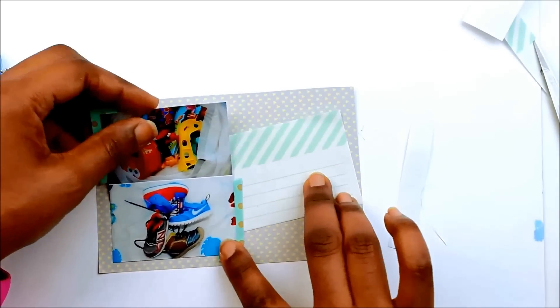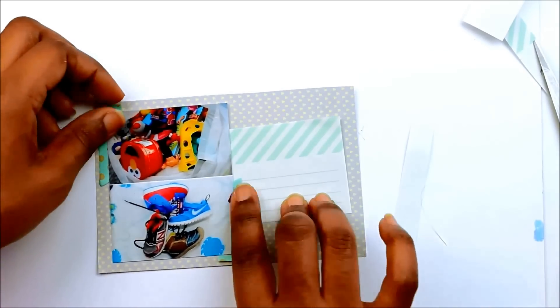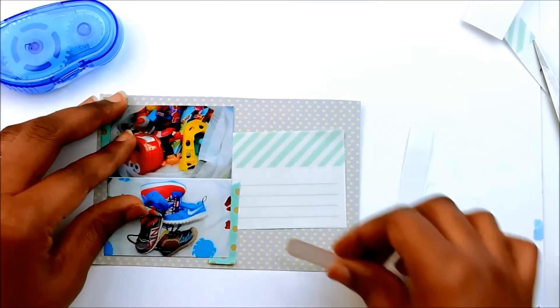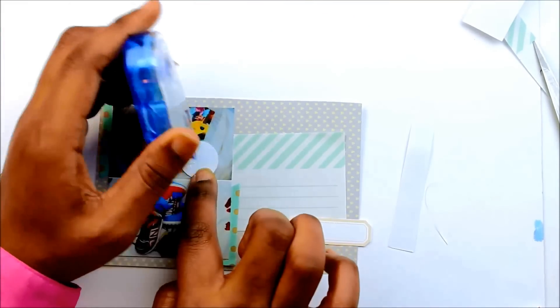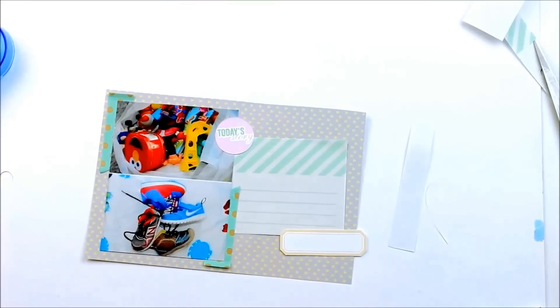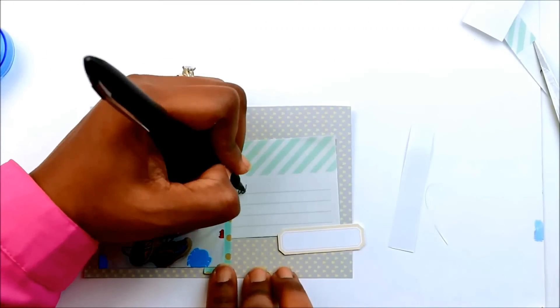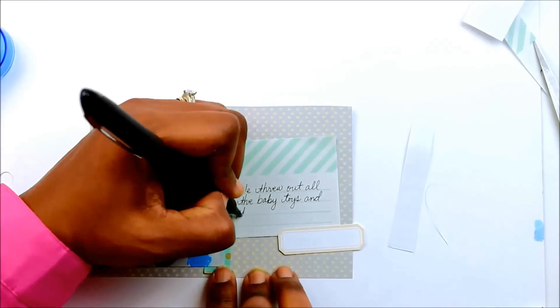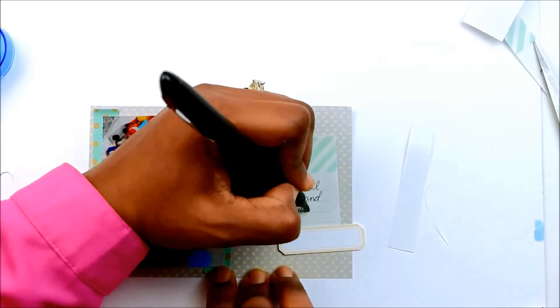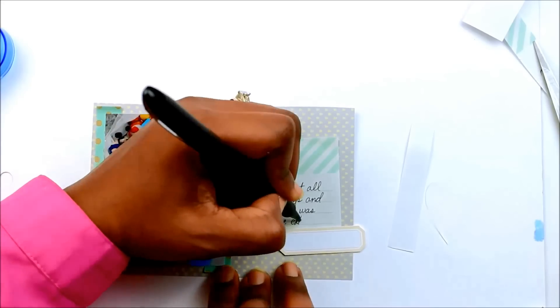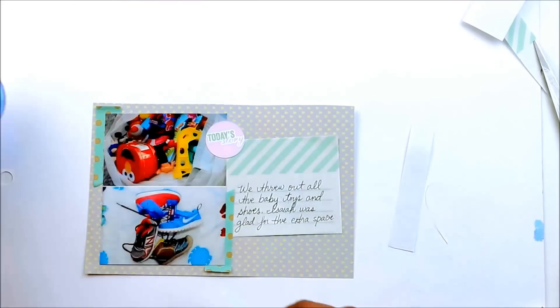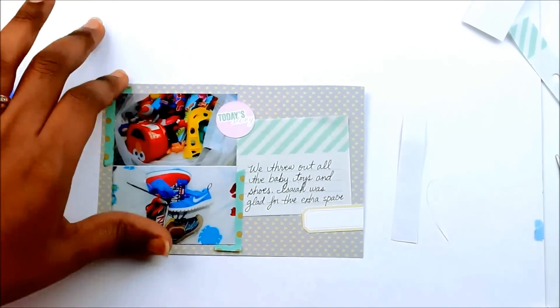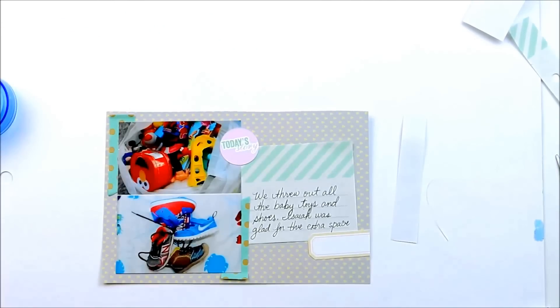I was just taking a picture. I have these things documented. I just think it's a nice place in Project Life to document these kinds of things because even though I can't save everything, I have that picture of it. I can always look back on it. My note is just we threw out all the basic baby toys and shoes, and I said he was glad for the extra space in his room because he was literally running out of space to play with all that broken stuff in there.